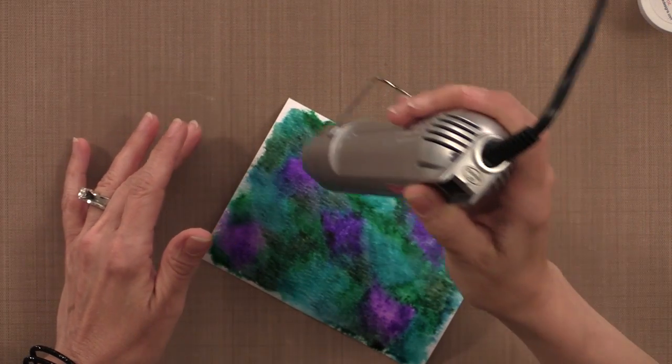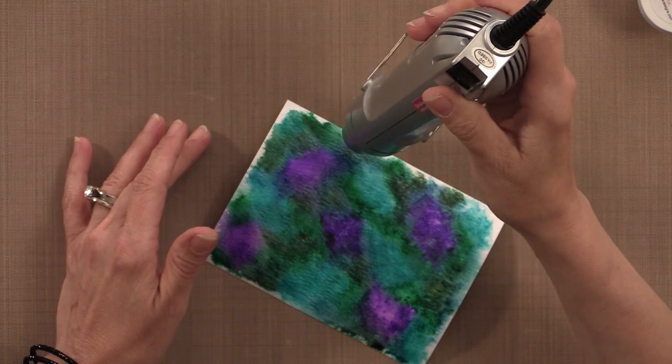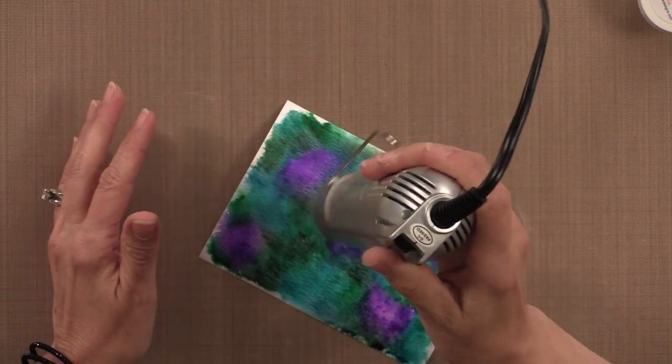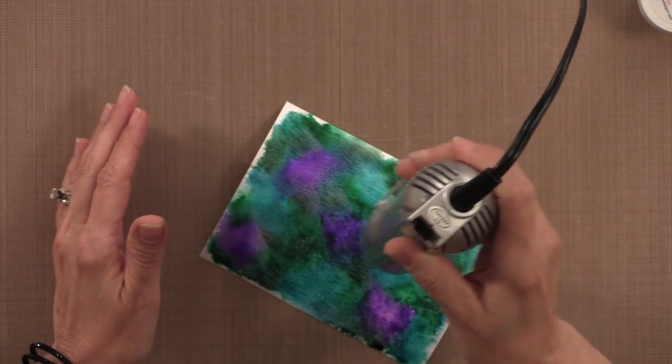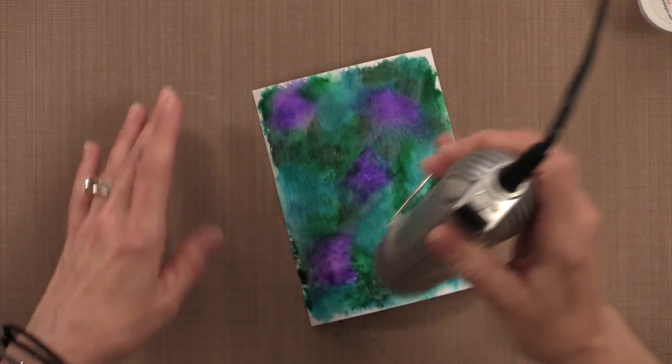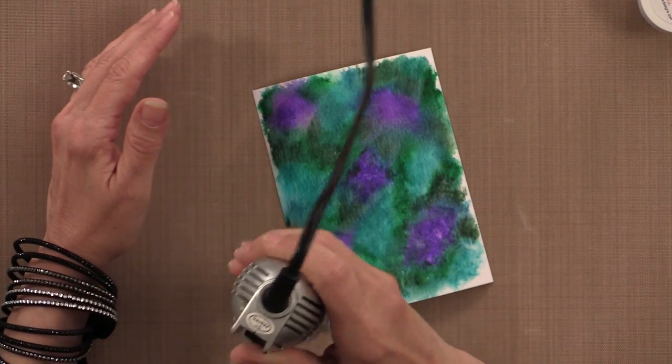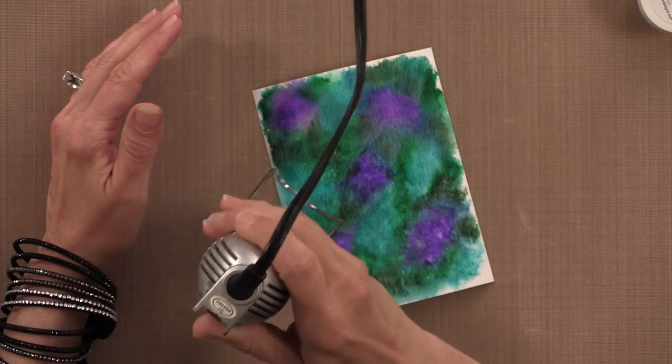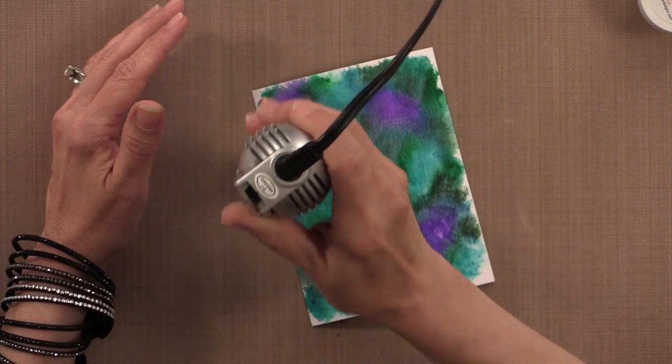When you're using the heat tool, even if you let it heat up a little bit first, you still will get a little bit of warping on the cardstock. To combat that, once it's dry on the front, I'm going to dry it from the back too. That'll kind of change the direction of the warp a little bit and get it to be a little bit flatter.